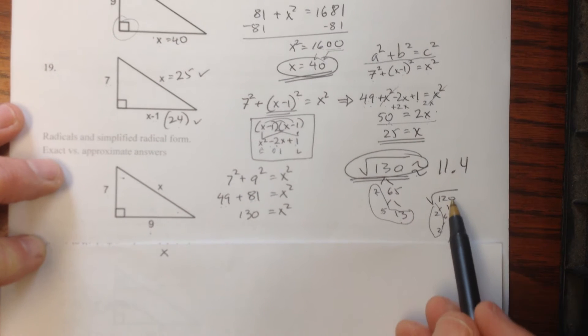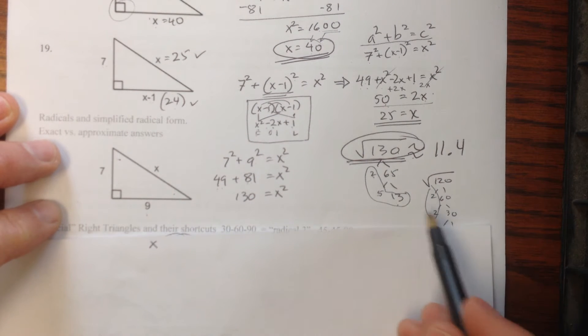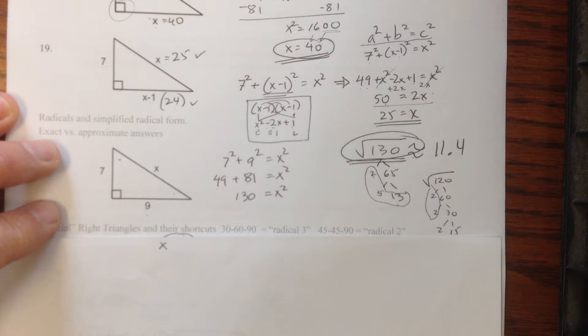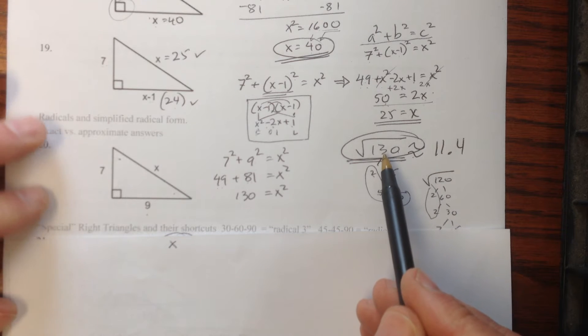If it had been 120, I could have taken out a couple of 2s and I'd wind up with 2 square root of 30. But that would be just an example of one that might simplify, but this one does not.